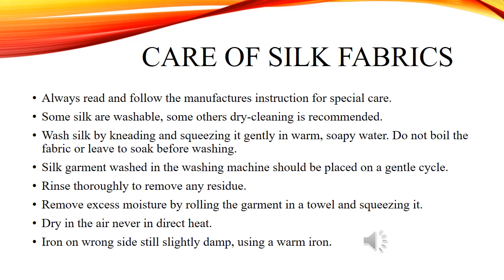Garments washed in the washing machine should be placed on a gentle cycle. Rinse thoroughly to remove any residue. Remove excess moisture by rolling the garment in a towel and squeezing it. Dry in the air, never in direct heat. Iron on the wrong side while still slightly damp, using a warm iron.